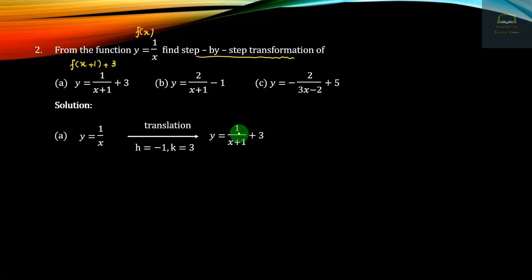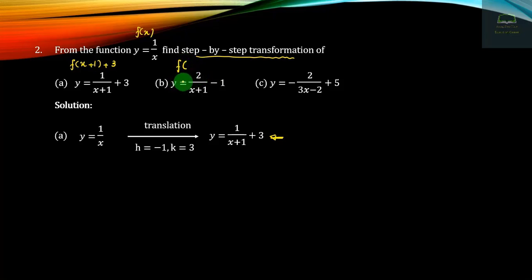This will be equal to 1 by h plus 1 plus 3. Number 2, this will be equal to 2 by h plus 1 minus 1. So this will be equal to 2 by h plus 1 minus 1. This will have 2 minus 1s plus 1 plus 1.